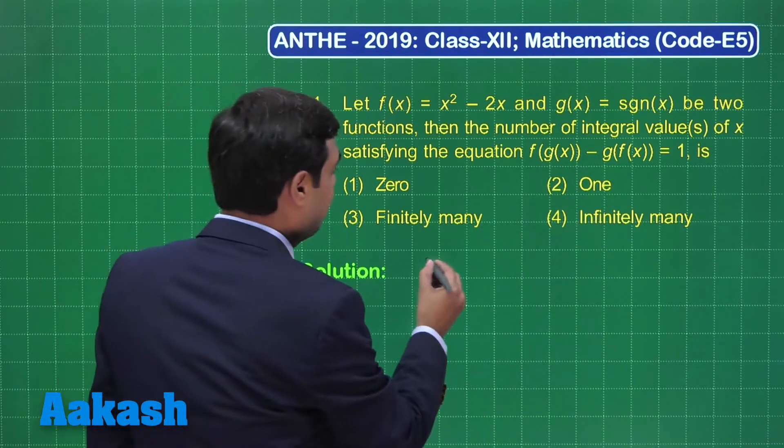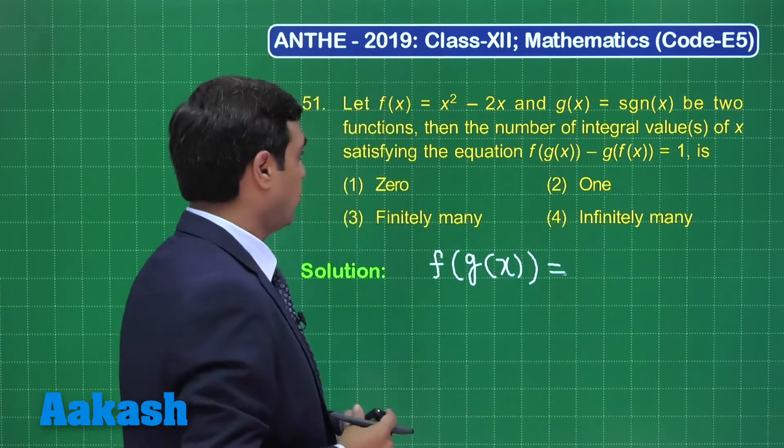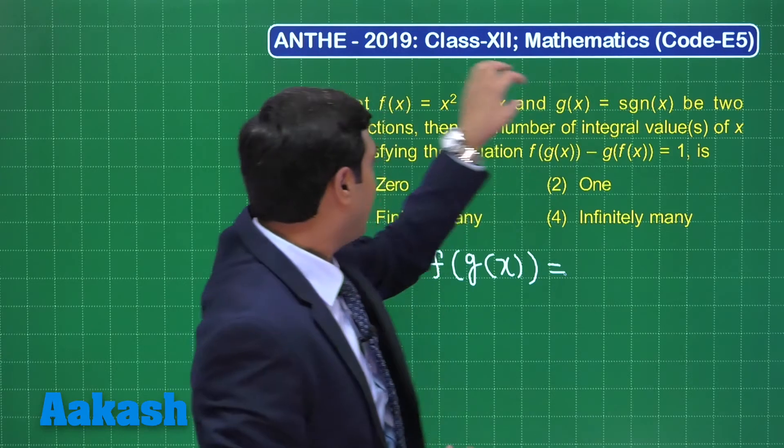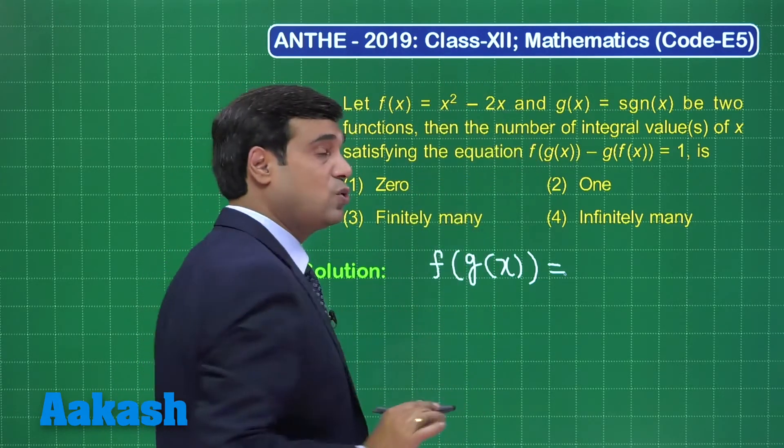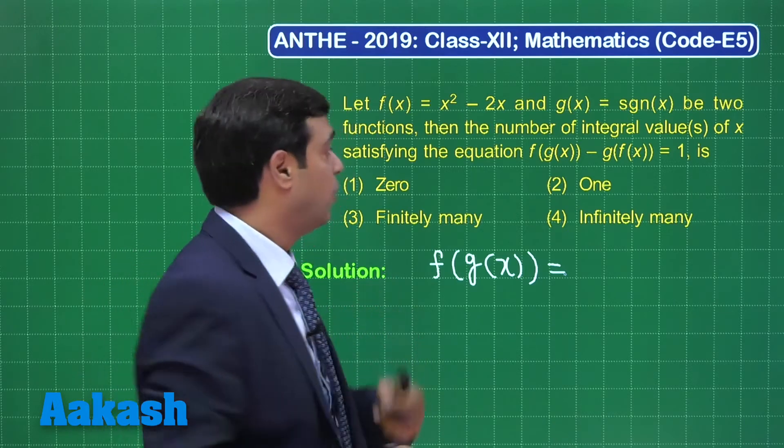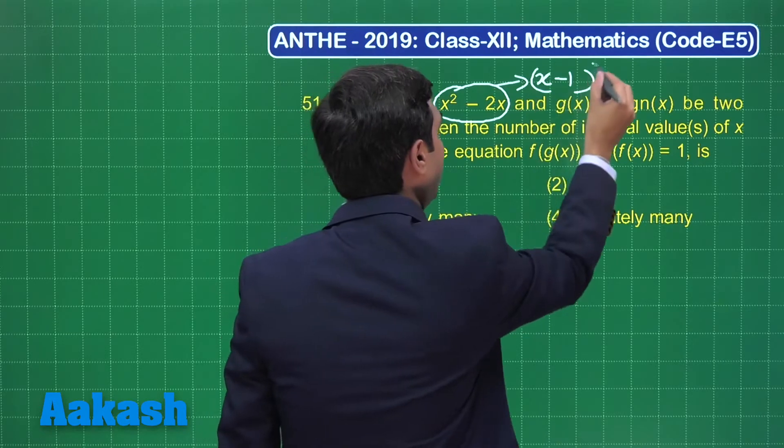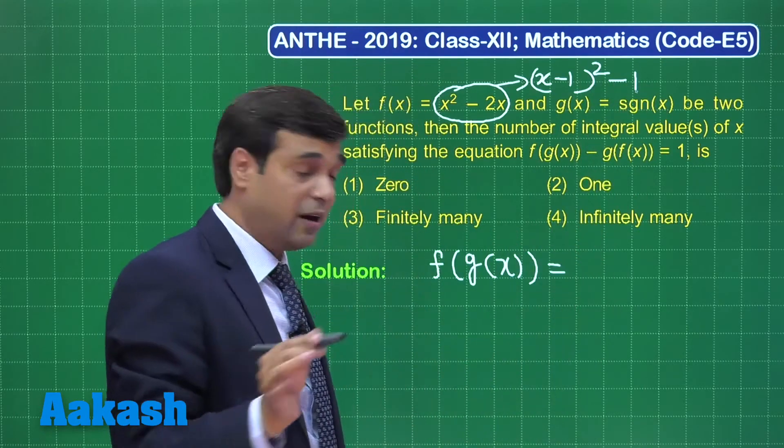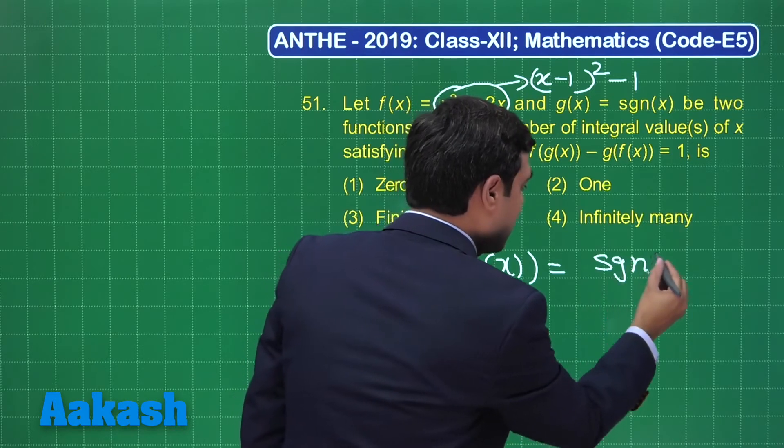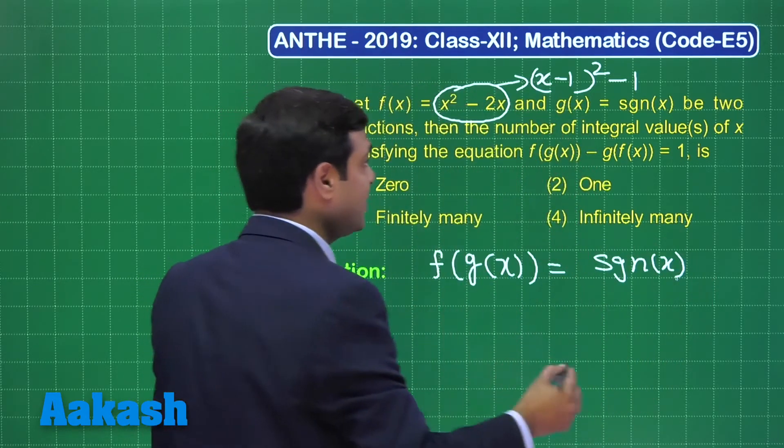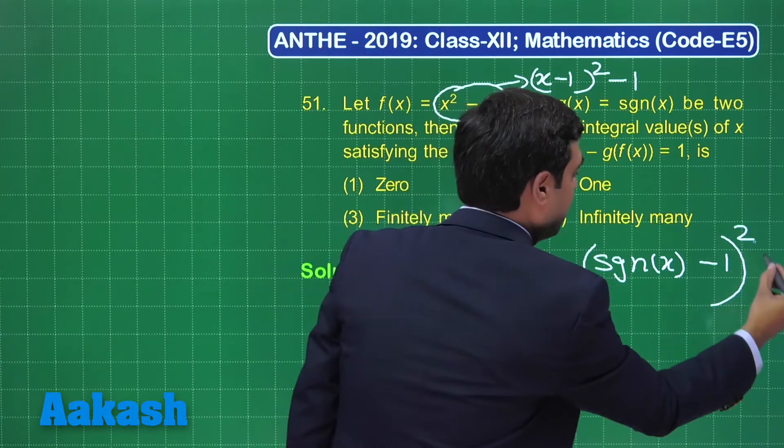Here you can find f(g(x)) is equal to... g(x) is signum x. When you put here, you are getting signum x whole square minus two of signum x. Also, you can rewrite this function as (x - 1)² - 1. That's clear. So you can rewrite it as signum x, right, instead of x here, minus one whole square minus one.